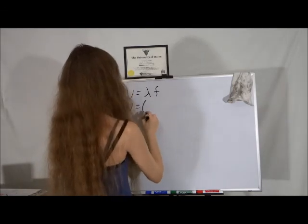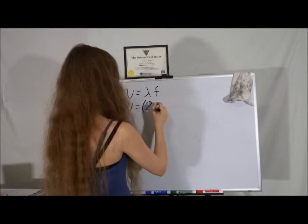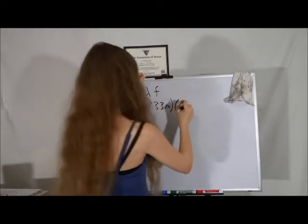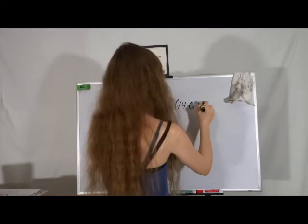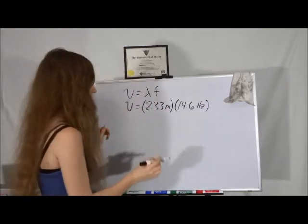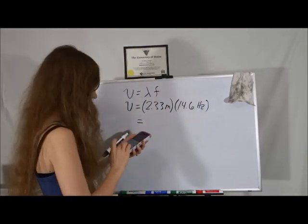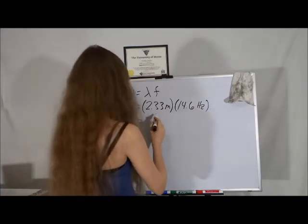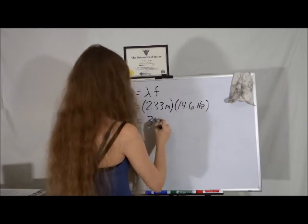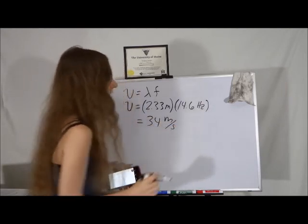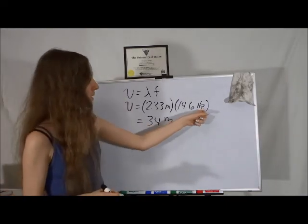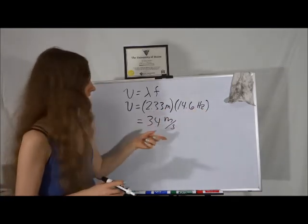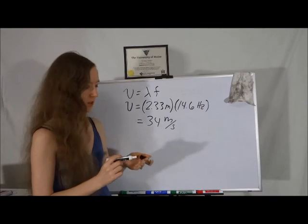So we're going to have v is equal to our wavelength, which we said was about 2.33 meters, and our frequency is about 14.6 hertz. So we're going to multiply these together. And we will get that the wave speed is about 34 meters per second. Now where do the units of meters per second come from? Well remember that hertz is 1 over second, so we have meters here, and we have 1 over seconds here. So our final answer to 2 sig figs would be 34 meters per second.